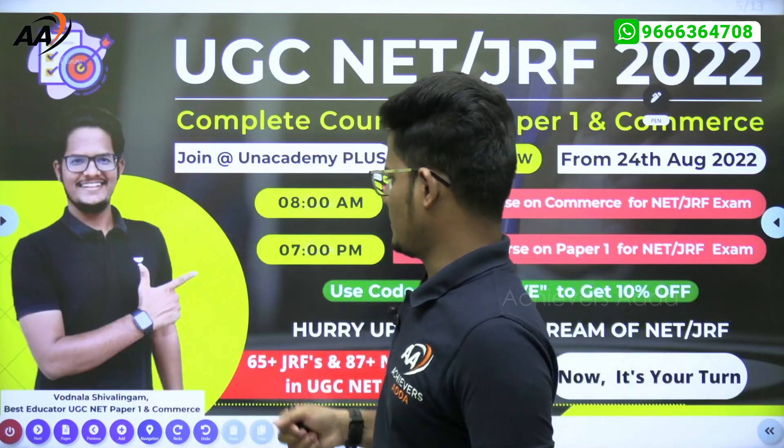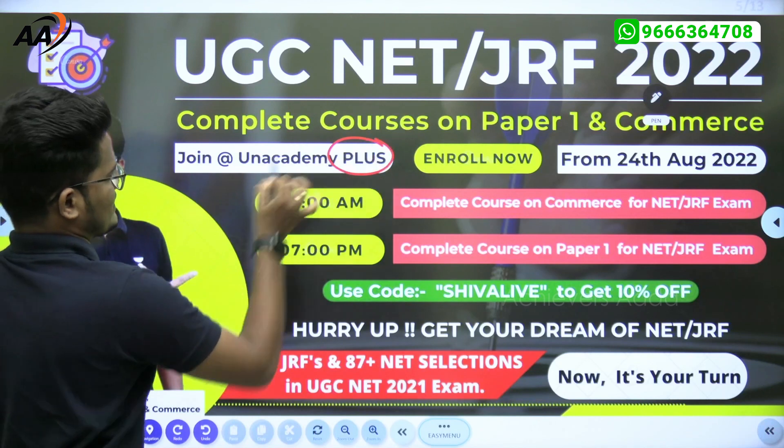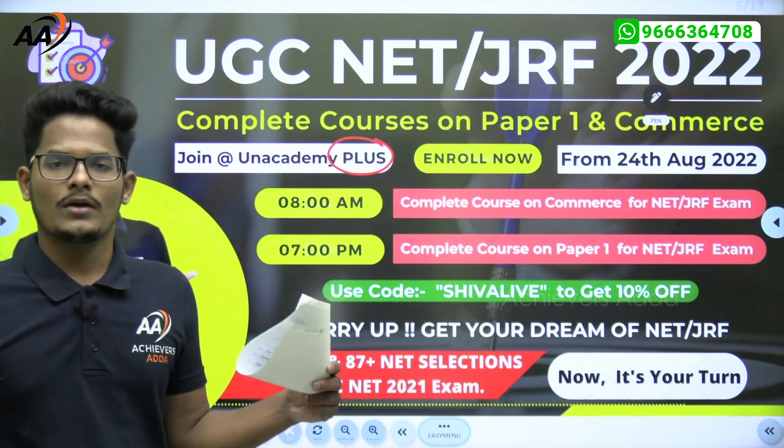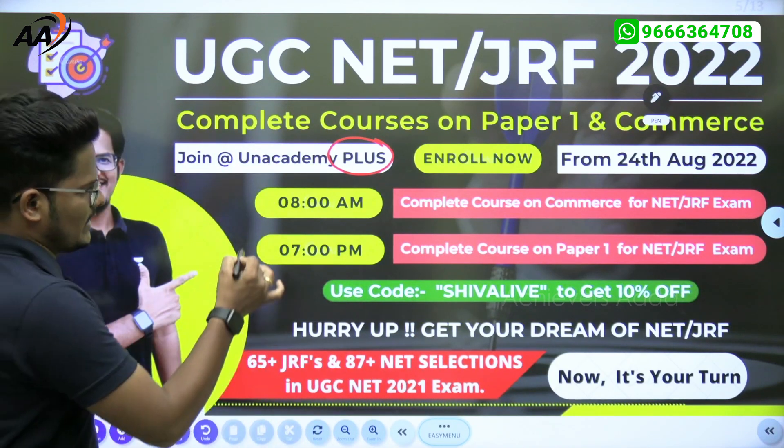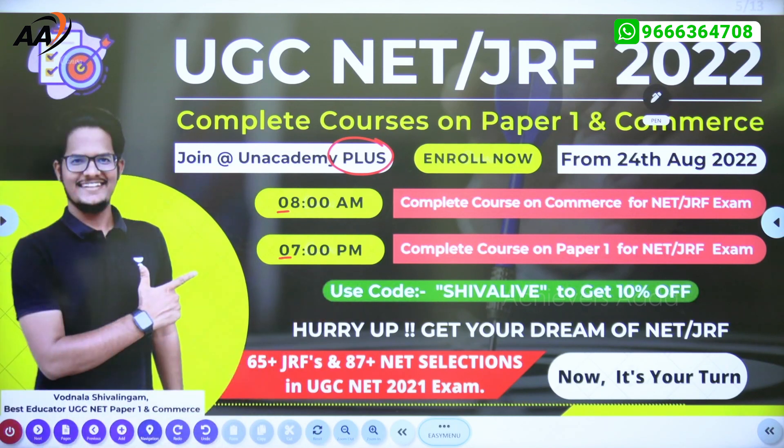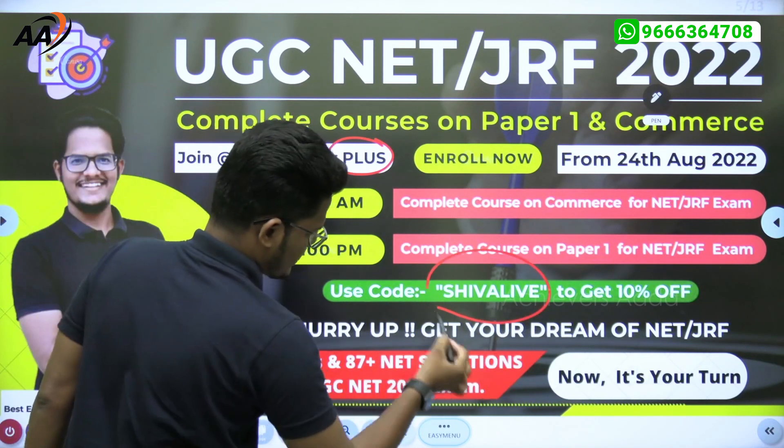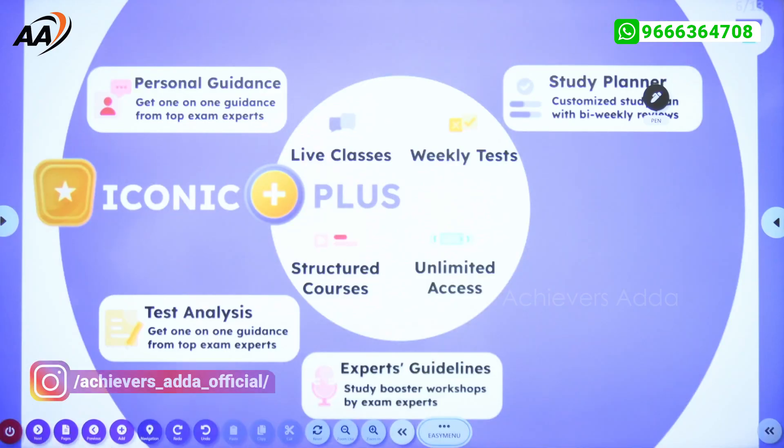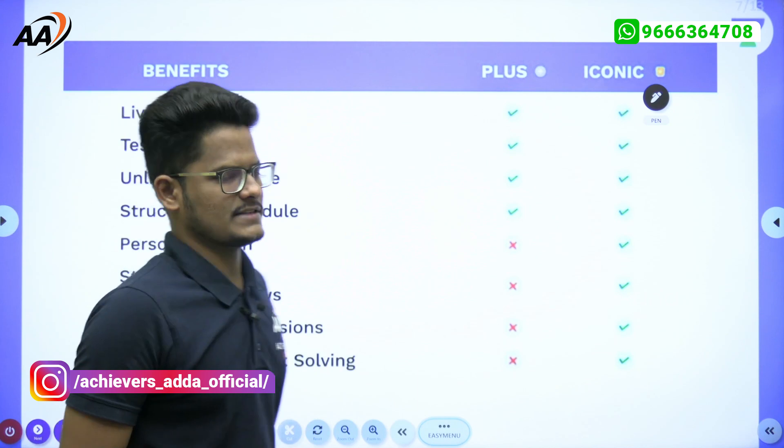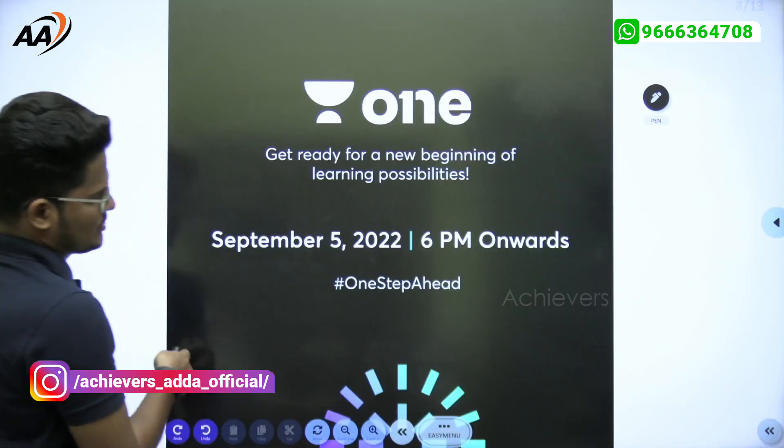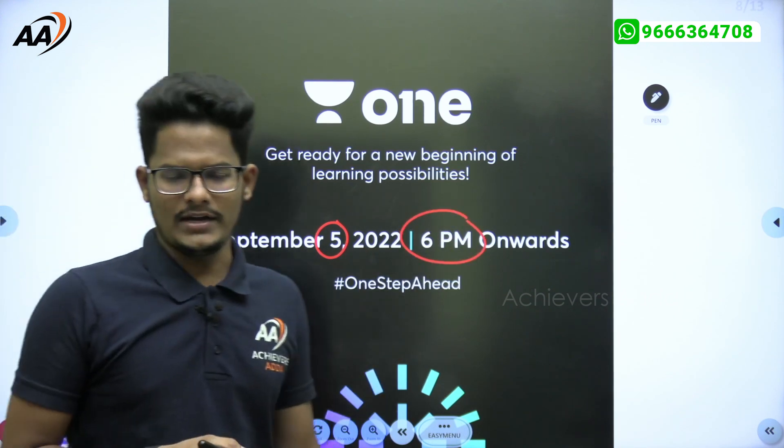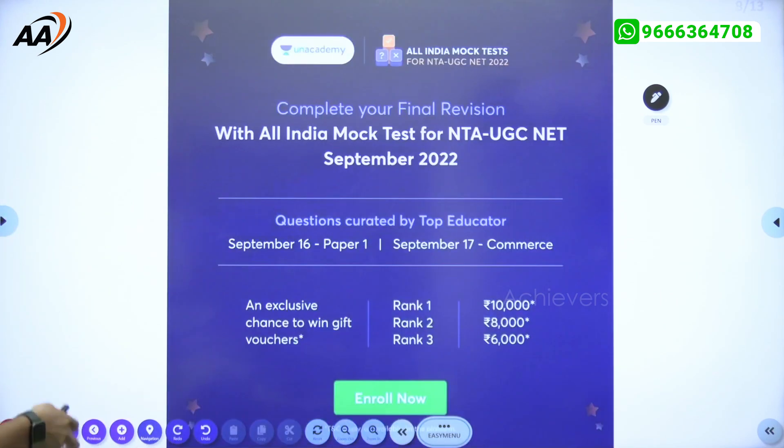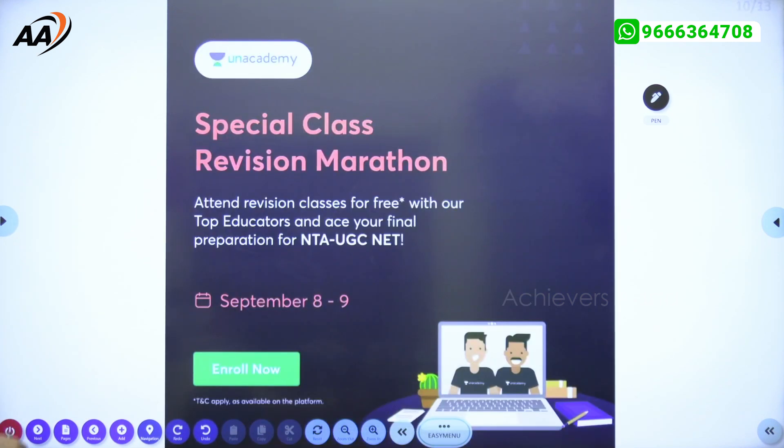If you want to join Unacademy Plus or Iconic subscription, you can join the Plus platform. Complete courses for upcoming December 2022 examination have started. Daily morning 8 AM commerce and 7 PM paper one is going on. You can take Unacademy Plus subscription by using my referral code SHIVALIVE. You will get 10% off on the subscription and you will also get all my PDF study material, which are chapter-wise presentations.